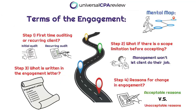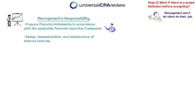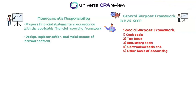What if there's a scope limitation prior to actually accepting the engagement? Scope limitations are situations where we can't do our job as the auditor. This could lead to a qualified opinion or a disclaimer of opinion if discovered during the audit. Within this agreement, management's responsibility — Max's responsibility over at Accrual World — is for the preparation and fair presentation of the financial statements in accordance with the applicable financial reporting framework, which can be U.S. GAAP or a special purpose framework such as cash basis, tax basis, or regulatory basis.